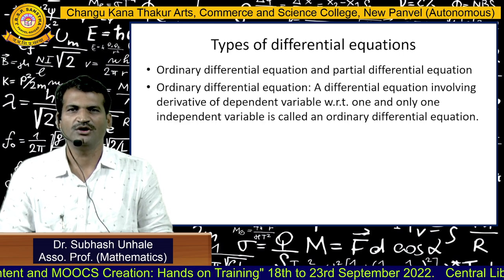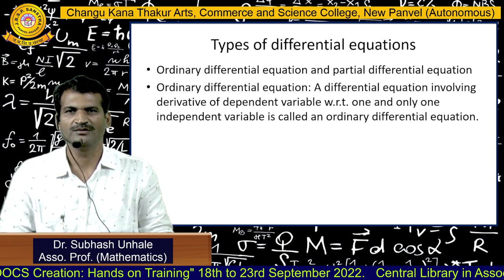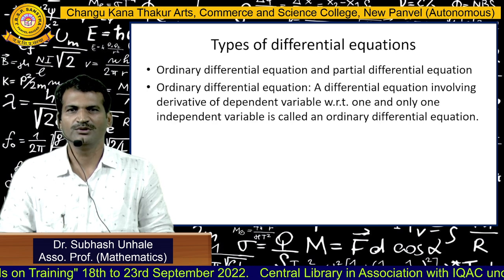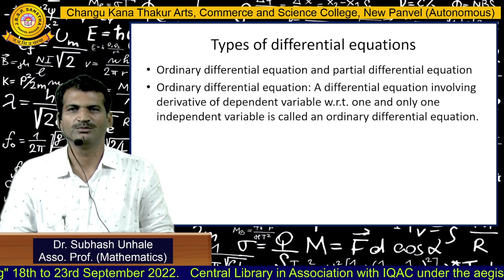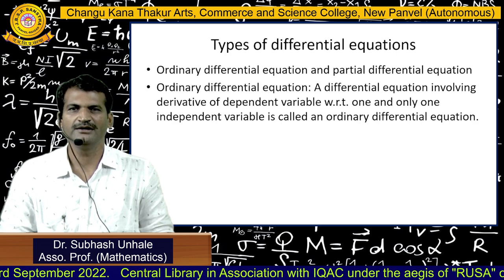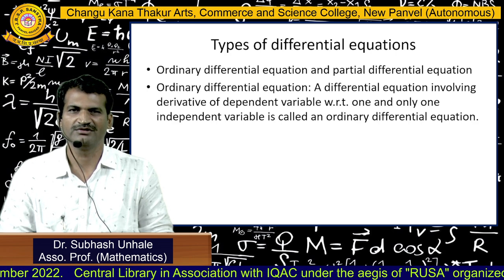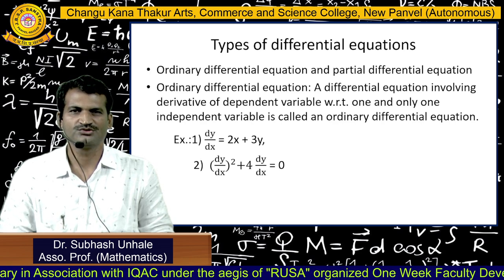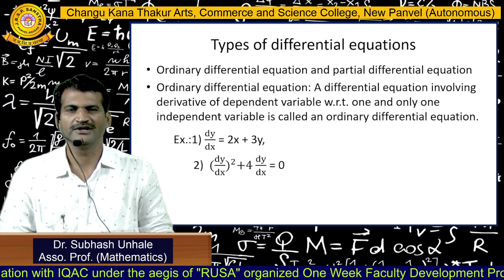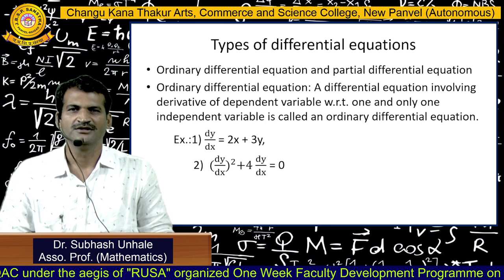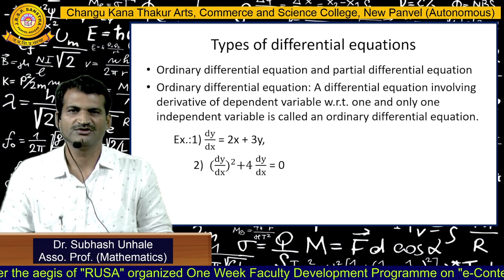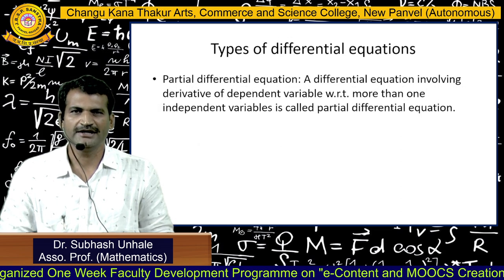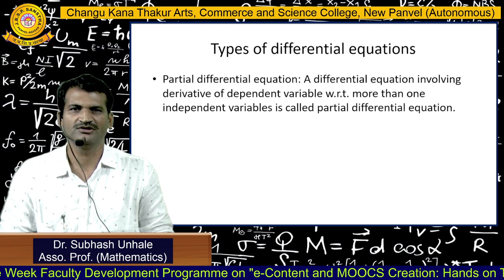We have mainly two types of differential equations: ordinary differential equations and partial differential equations. An ordinary differential equation involves derivatives of a dependent variable with respect to one and only one independent variable. Examples include dy/dx = 2x + 3y and (dy/dx)² + 4·(dy/dx) = 0.